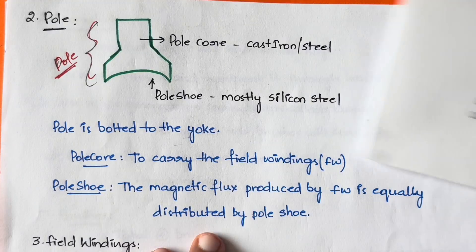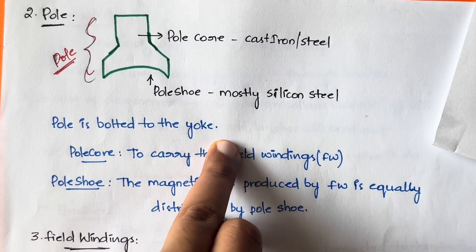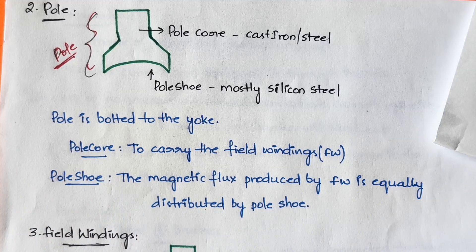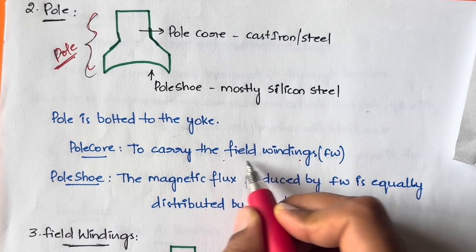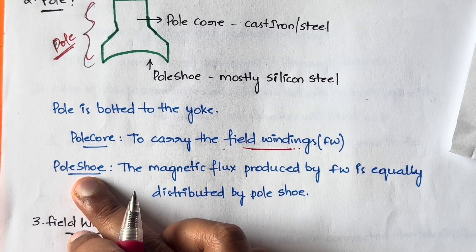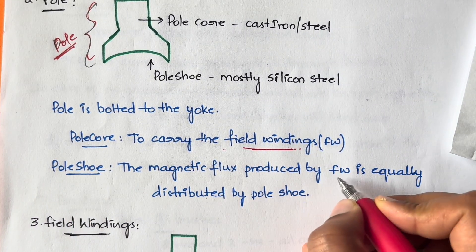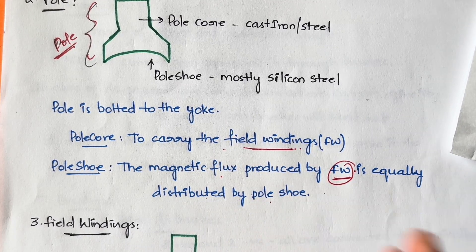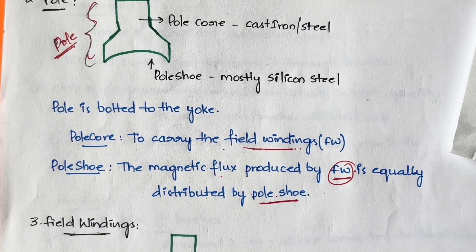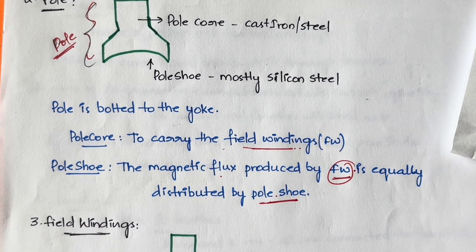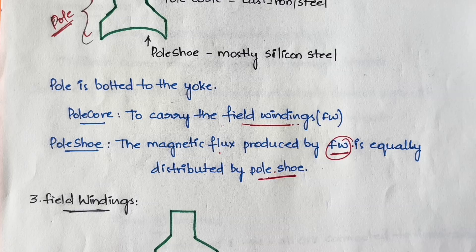The pole is bolted to the yoke using screws. The pole core is used to carry the field windings. The pole shoe distributes the magnetic flux produced by the field windings equally throughout the machine. So the pole shoe basically distributes the magnetic flux developed by the field windings to the other parts of the machine.